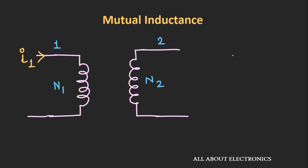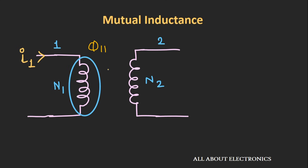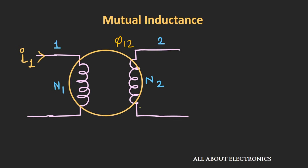Now let's see mutual inductance. Let's say we have two coils, coil 1 and coil 2, with number of turns N1 and N2 respectively. Current I1 is flowing through coil 1, and because of this current there is a generation of magnetic flux φ1. This flux will link with both coil 1 and coil 2. Let's say φ11 is the flux linked with coil 1, and φ12 is the flux linked with coil 2.